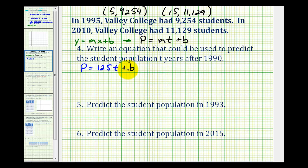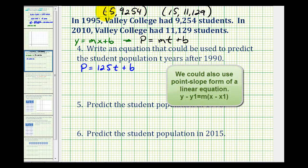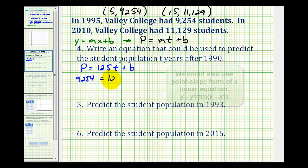Now in order to determine the y-intercept, what we'll do is we'll select one of these points, substitute the population for p and the years past 1990 for t to solve for b. Let's go ahead and just use this first point. So we'd have 9,254 must equal 125 times 5 plus b. So we'd have 9,254 equals 625 plus b.